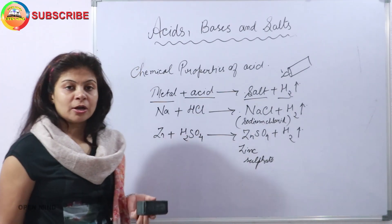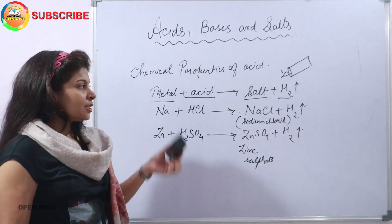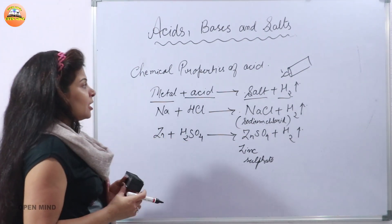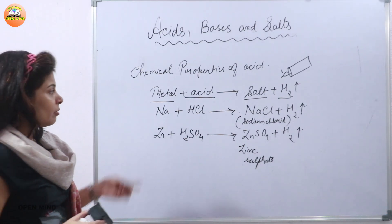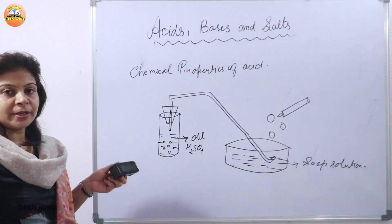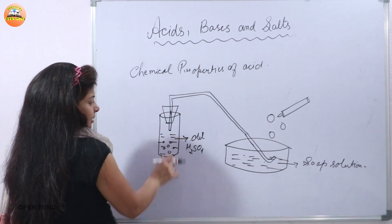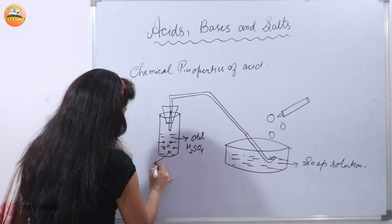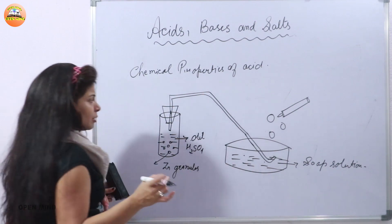To test whether it is hydrogen gas, just bring a burning candle close to it — it burns with a pop sound, which indicates it contains hydrogen. Now we will see an activity to prove that metal plus acid gives you salt and hydrogen gas. In this activity, you take some dilute H2SO4 inside a test tube, then add some zinc granules — zinc granules are very small pieces of zinc.